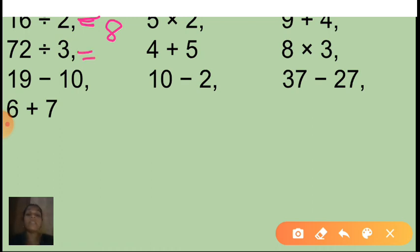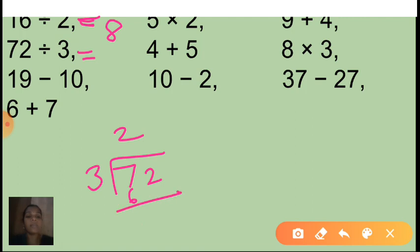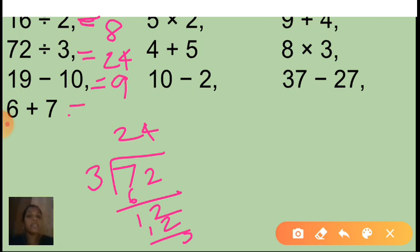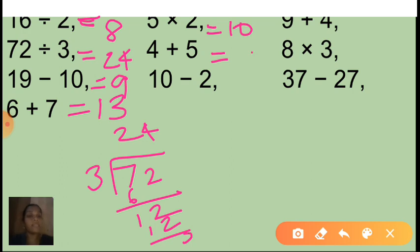And the next one is 72 is divided by 3. Tell me now — 2 threes are 6, 4 threes are 12, so what is the value? 24. And the next one is 19 minus 10 — very good, 9. And 6 plus 7 — that is 13. And next one is 5 into 2 — 5 twos are 10. And 4 plus 5 — the answer is 9.